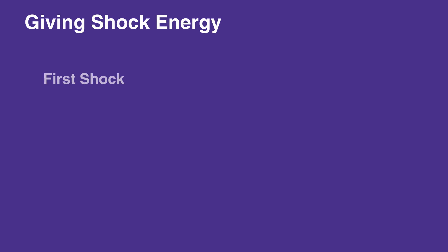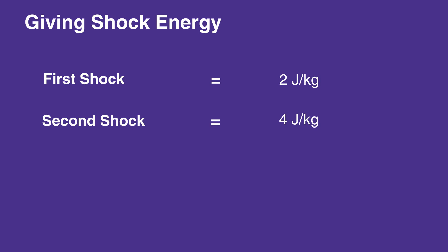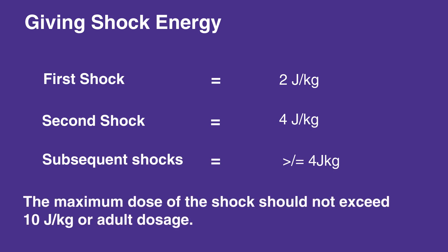When giving shock energy, the first shock should be 2 joules per kilogram. The second shock should be 4 joules per kilogram. Subsequent shocks should be greater than or equal to 4 joules per kilogram. The maximum dose should not exceed 10 joules per kilogram or adult dosage.